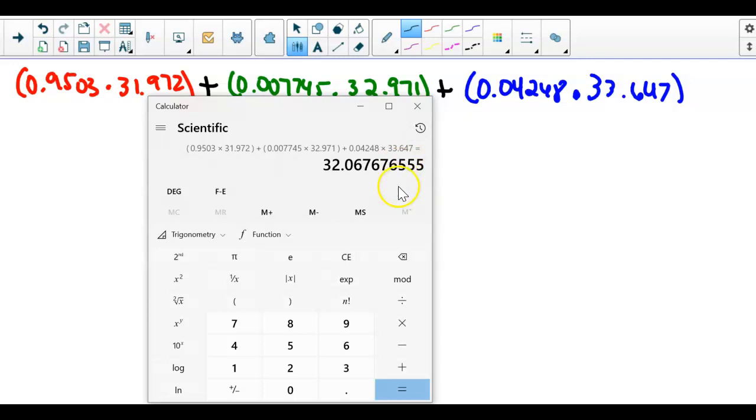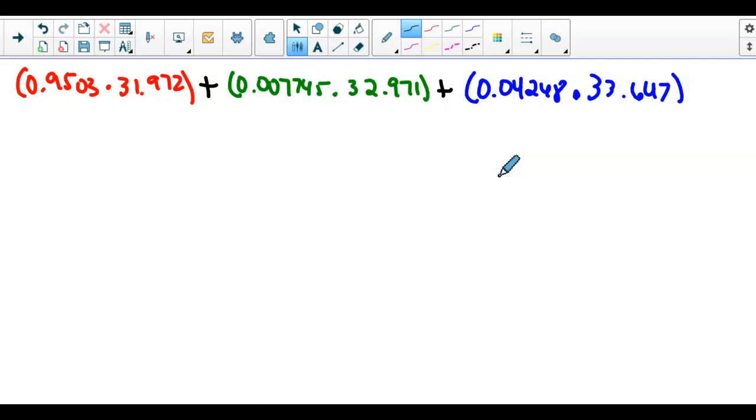We're going to round our answers at the second decimal place. So here's the first, here's the second. So I'm looking at the 6, and that 7 tells me to round it up, because 7 rounds the 6 up. So it's going to be 32.07 amu.